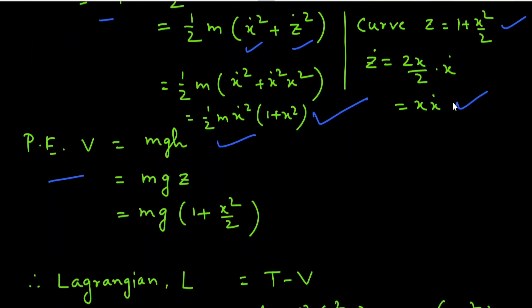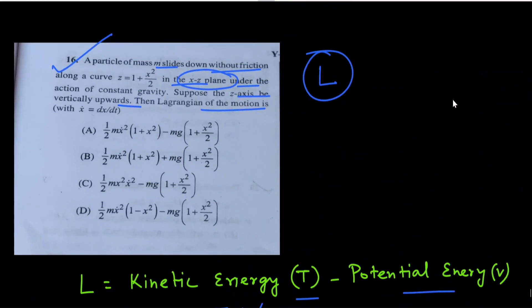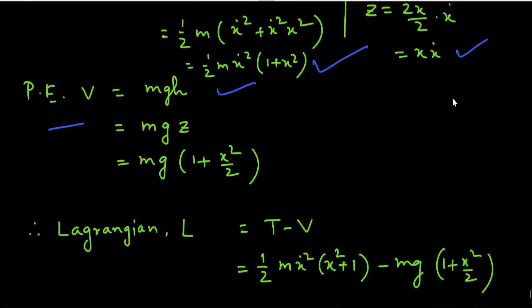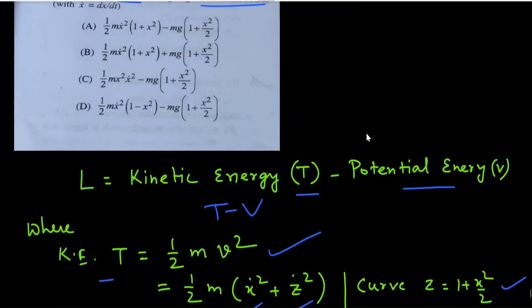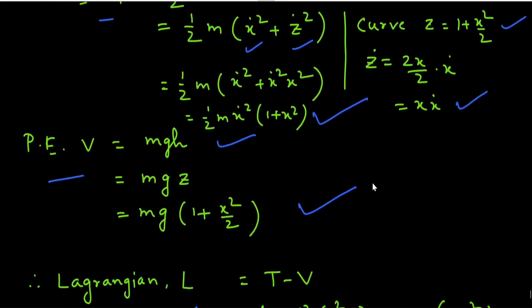The potential energy V = mgh. Since the z-axis is vertically upward, height h = z = 1 + x²/2. Therefore L = T − V gives L = ½m·ẋ²(1 + x²) − mg(1 + x²/2). Option A is clearly the correct answer. Moving to the next question.